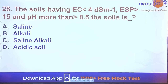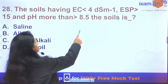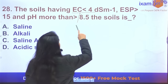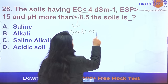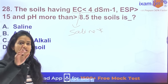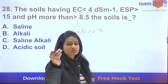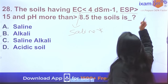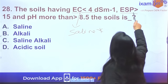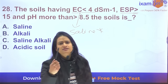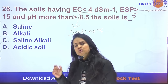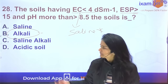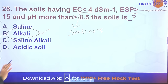Question 28: A soil with electrical conductivity (EC) less than 4 dS/m — since saline soil always has EC more than 4 because it contains many ions — this is not a saline soil. If exchangeable sodium percentage (ESP) is more than 15, it is a sodic (alkali) soil. So the answer here is sodic/alkali soil.